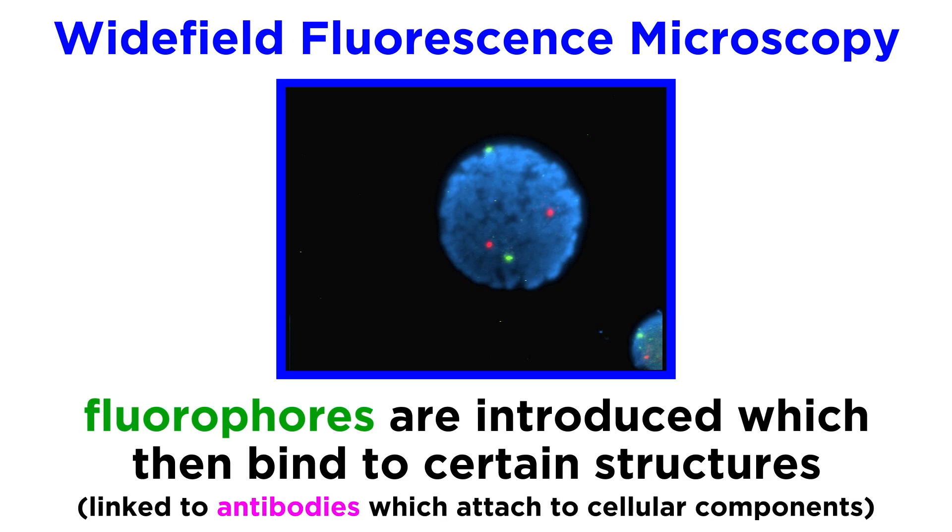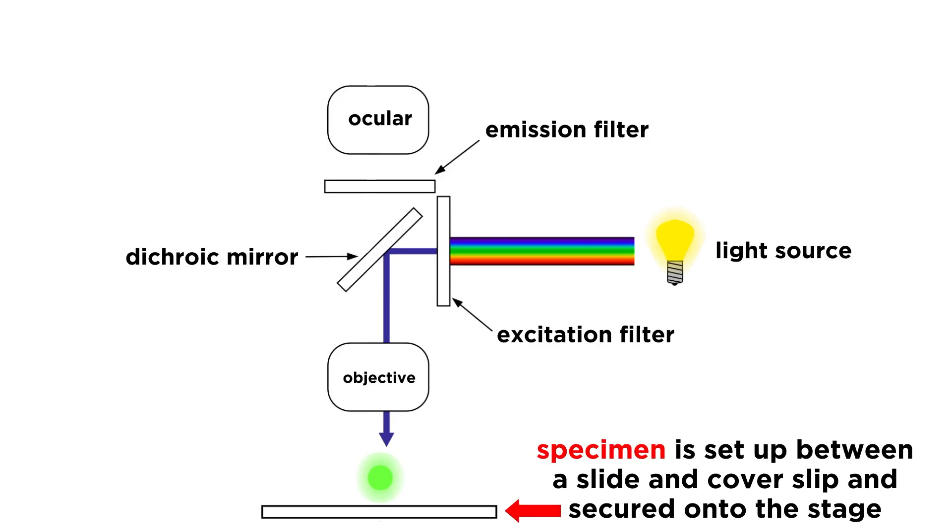Most commonly, fluorophores are linked to antibodies that are made to detect and attach to certain cellular structures, like parts of the nucleus or cytoskeletal filaments. After the different fluorophores for the different structures in the specimen are added, the specimen is set up between a slide and cover slip and secured onto the stage of the microscope.